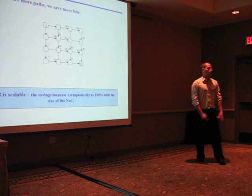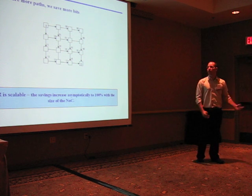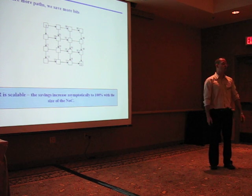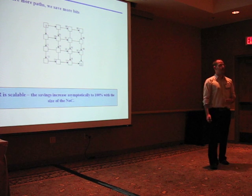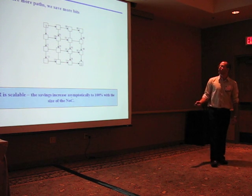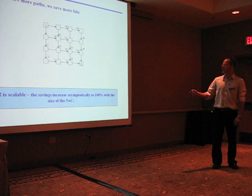In the previous example, we saved one parity bit. And as the network grows, we have more edge disjoint paths, and we can save more parity bits.